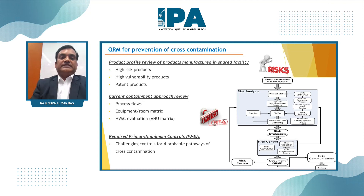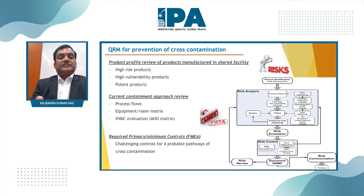An adequate risk management system must be in place to manage cross-contamination. Product profiling and review must identify high-risk and high-potent products, and risk assessments must cover process flow, equipment, and HVAC systems. Failure Mode and Effect Analysis must be done across the four contamination pathways, and adequate controls must be established.